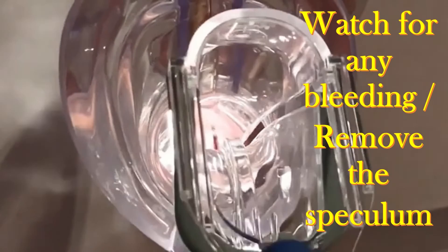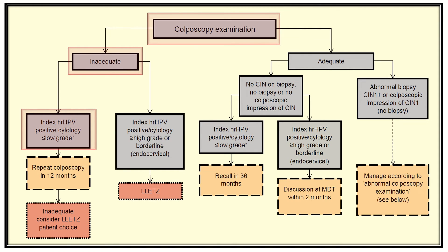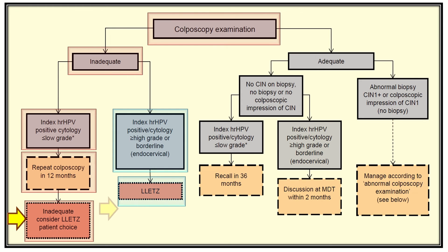From NHS cervical screening guideline algorithms, the role of large loop excision of the transformation zone is as follows: During colposcopy for suspected cervical intraepithelial neoplasia, if the sample is inadequate, high-risk HPV is positive, and cytology is low grade, repeat colposcopy in 12 months. If the sample is again inadequate, proceed to large loop excision based on patient choice. If high-risk HPV is positive with high-grade or borderline endocervical cytology, proceed straight to large loop excision.